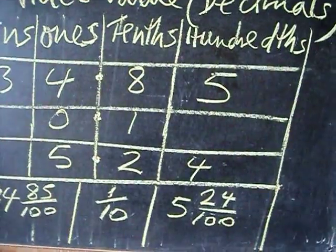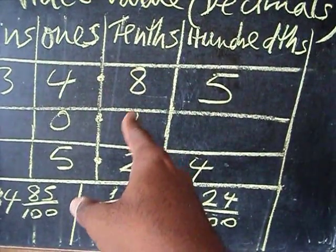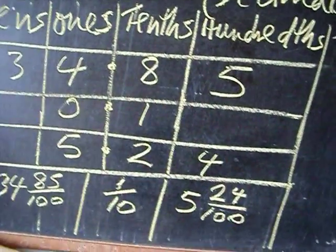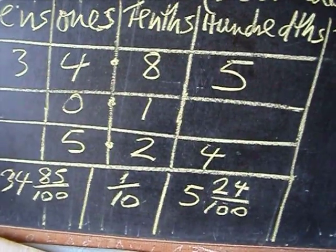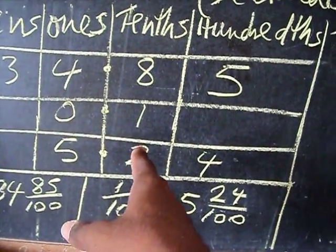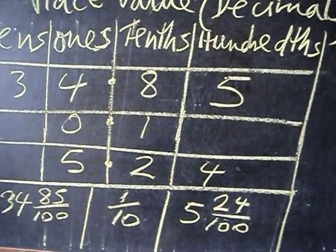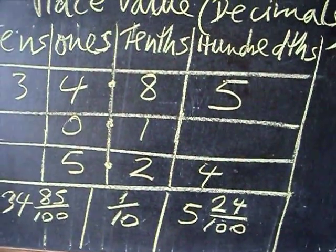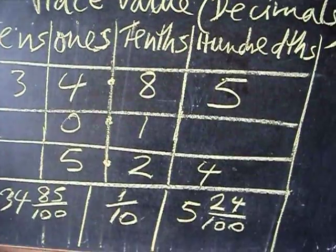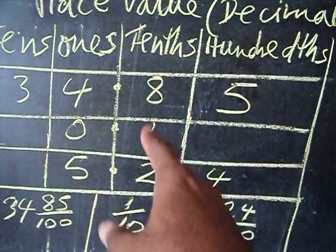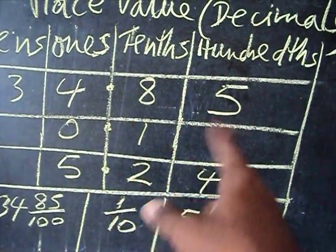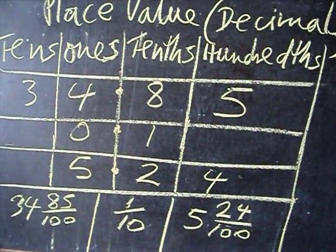If you have, let's say, 9, it is 9 over 10. If you have 6 here, it will be 6 over 10 as a fraction. But if you have 85 here, it is 85 over 100. If you have 26, it will be 26 over 100, and so on.